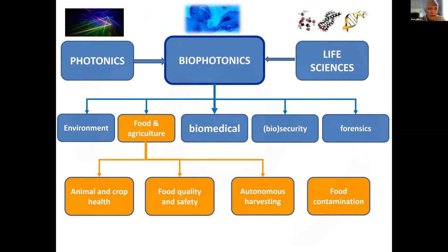Food and agriculture: increasing interest here for monitoring animal and crop health, food quality and safety monitoring. Autonomous harvesting is increasingly of interest, robotic harvesting, which needs visual guidance but also increasingly uses hyperspectral data to determine the ripeness of the crop. Another area is contamination of food.